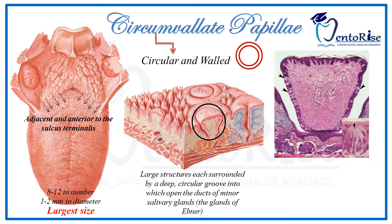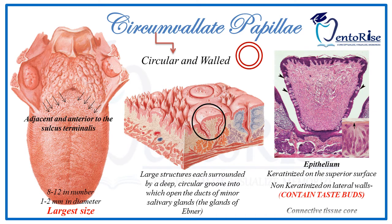If we talk about the histopathology, it consists of epithelium and a connective tissue core. The epithelium is keratinized on the superior surface, while on the lateral walls the epithelium is non-keratinized. The taste buds of the circumvallate papilla are present on the lateral walls and are characteristically responsible for bitter taste.